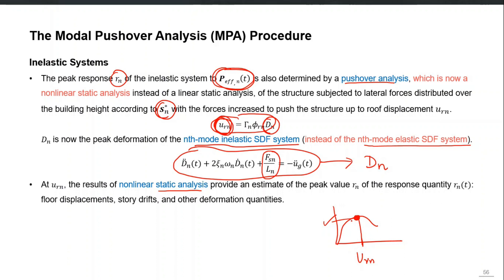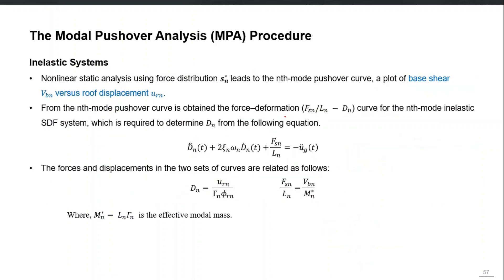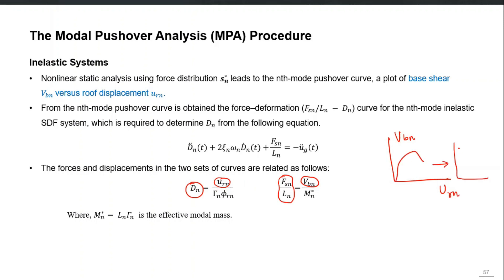For inelastic systems, one approach to calculate D_N is to solve the single degree of freedom system. This step explains how we convert the pushover curve V_BN versus U_rN into F_SN over L_N versus D_N. The summary is that V_BN — the nth mode base shear — and U_rN — the nth mode roof displacement — this pushover curve is converted into the force-deformation curve of that particular mode, with F_SN/L_N on the y-axis and D_N on the x-axis.